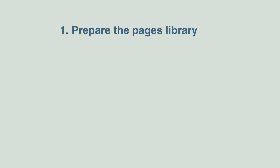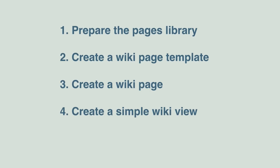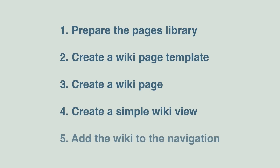To summarize what we've covered: first we prepared the pages library by creating a new column called Wiki Page. Then we created a wiki page template saved in the pages library. We then created a wiki page based on that template. Next we created a simple wiki view that filtered out all pages that weren't wiki pages and changed the grouping so it looked neat. Finally we added the wiki to the navigation so it's easy to get to.